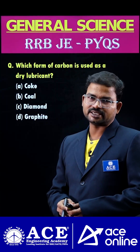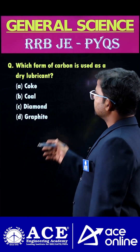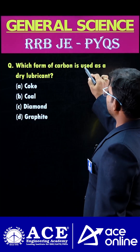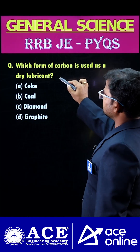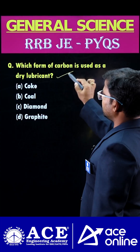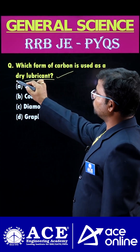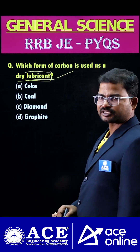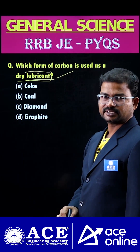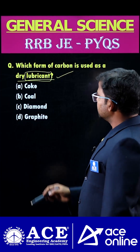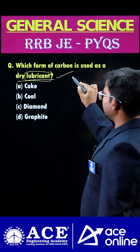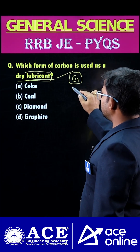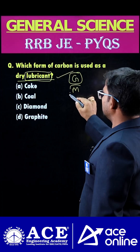Hi students, welcome to ACE Online. Which form of carbon is used as a dry lubricant? A lubricant is used to reduce frictional forces. Generally we mostly use grease and also oil.